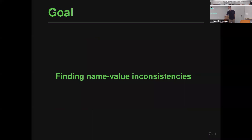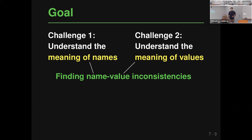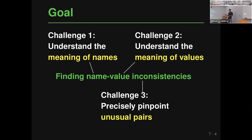What these two examples have in common is an inconsistency between a value and the name referring to it — in the first case causing incorrect behavior, in the second making the code hard to understand and maintain. Our goal is to find such name-value inconsistencies. The challenges are: (1) understanding the meaning of names (which typical program analysis discards), (2) understanding the meaning of values, and (3) precisely pinpointing unusual name-value combinations without overwhelming developers with false positives.